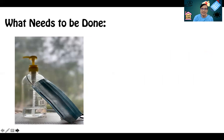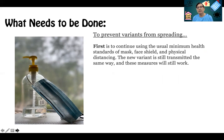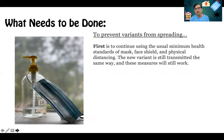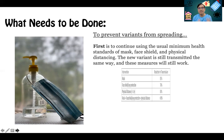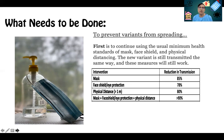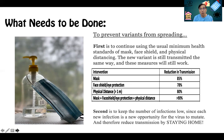At the present time, to prevent this variant from spreading locally, our government has already stopped the borders to foreign citizens, specifically from the UK, from entering our country. On our part, it is very important that we continue to use the minimum health standards of mask, face shield, and physical distancing. This new variant is still transmitted the same way, so the same measures we're using now will continue to work.